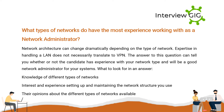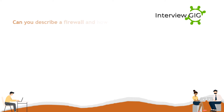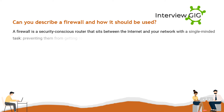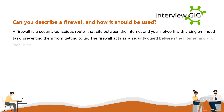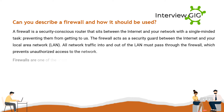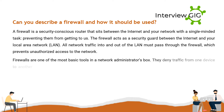Can you describe a firewall and how it should be used? A firewall is a security-conscious router that sits between the internet and your network with a single-minded task: preventing them from getting to us. The firewall acts as a security guard between the internet and your local area network (LAN). All network traffic into and out of the LAN must pass through the firewall, which prevents unauthorized access to the network.